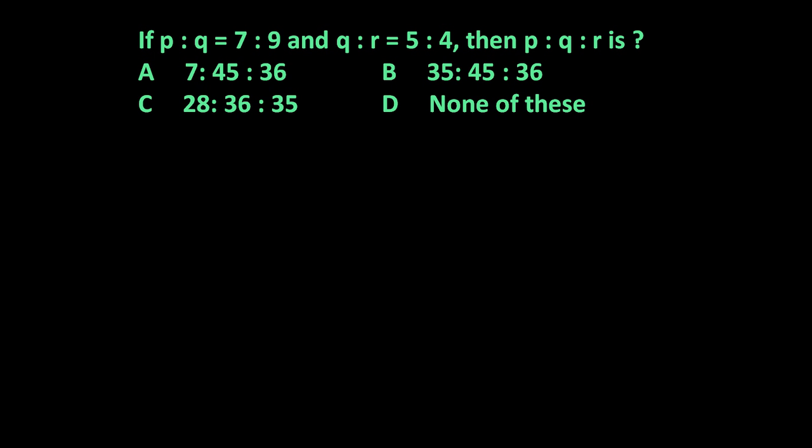Here the given problem is: if P is to Q is 7 is to 9 and Q is to R is 5 is to 4, then P is to Q is to R is? These four options are given and we have to find out the correct option.